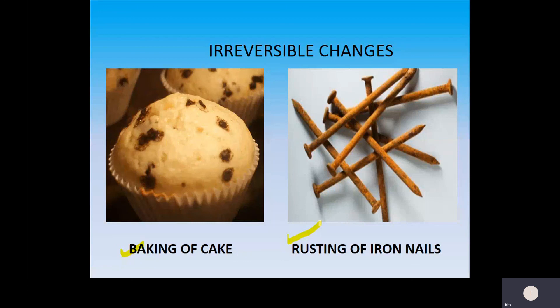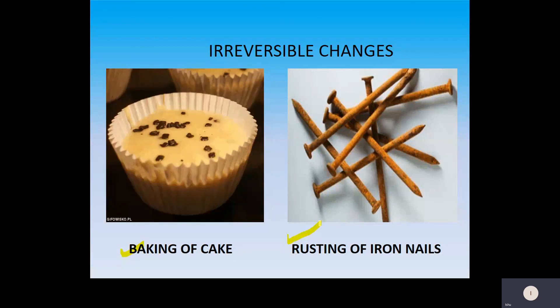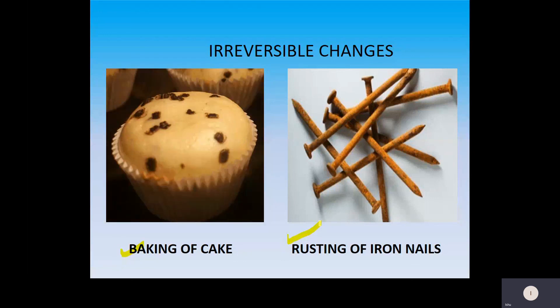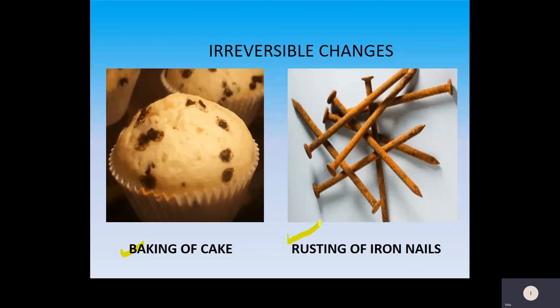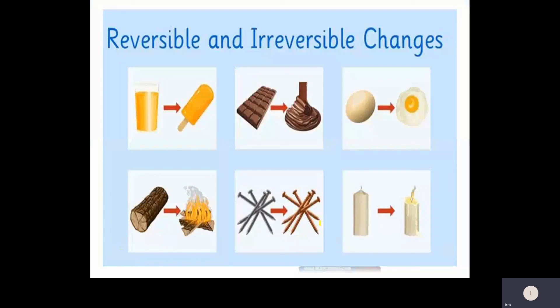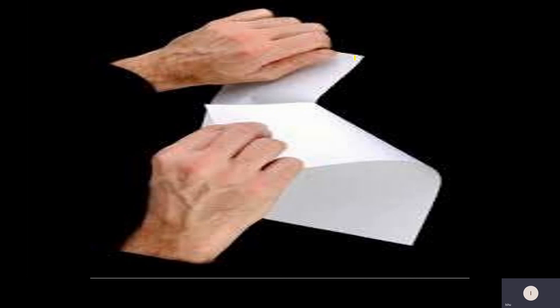I hope you will now be able to understand the basic difference between physical changes, chemical changes, and reversible and irreversible changes, and how they are related to each other. For homework, you will identify which change is reversible and which change is irreversible from the examples given. I hope you will be able to identify all kinds of changes. That is all about this lesson. Thank you and have a good time.